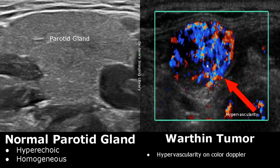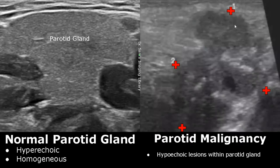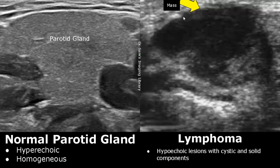Malignancy in the parotid gland has various appearances, but it usually contains hypoechoic lesions which are somewhat irregular in shape. Here is a case of lymphoma which has affected the parotid gland — we see a hypoechoic mass with mixed cystic and solid components.